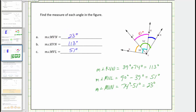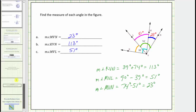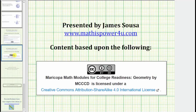Let's label this and check our work. This angle is 23 degrees. Notice how 23 degrees plus 51 degrees equals 74 degrees, which is the measure of angle LVN. Therefore our work is correct. I hope you found this helpful.